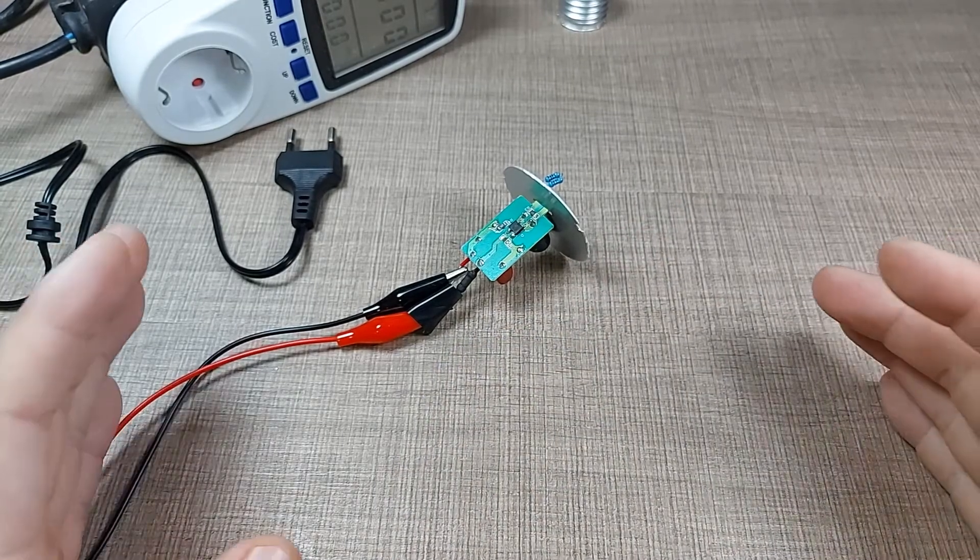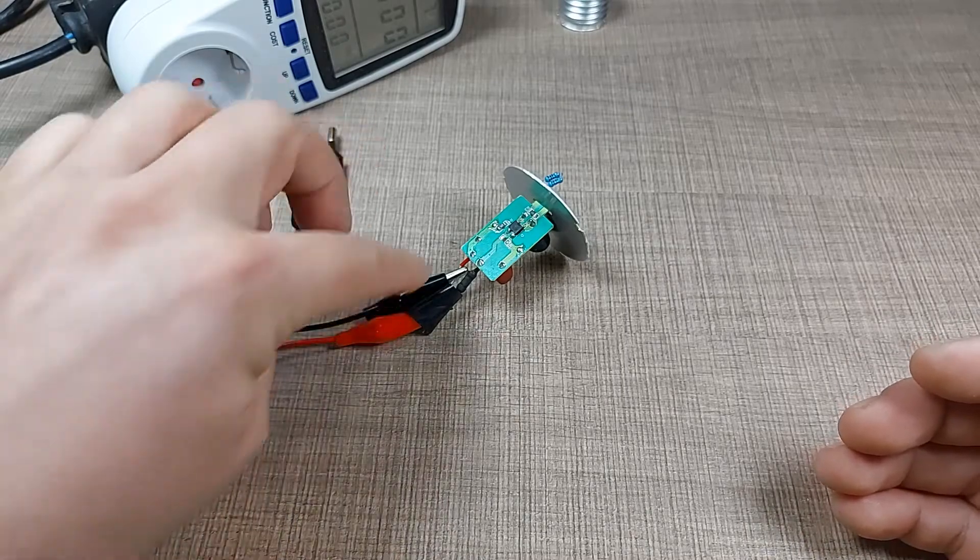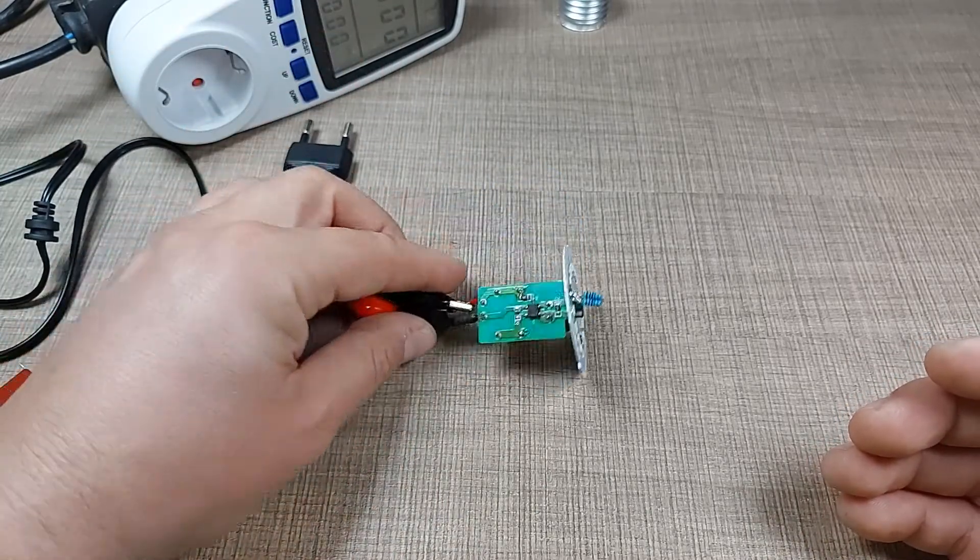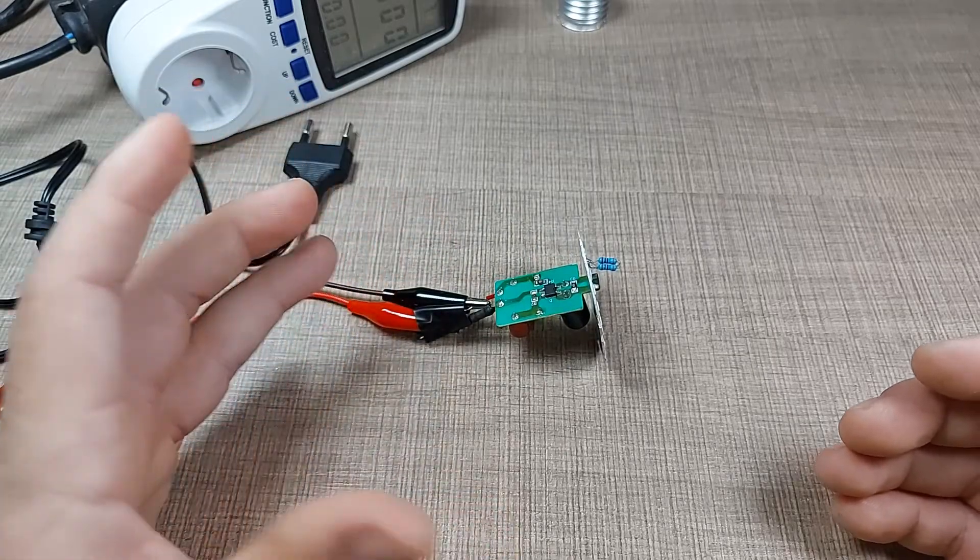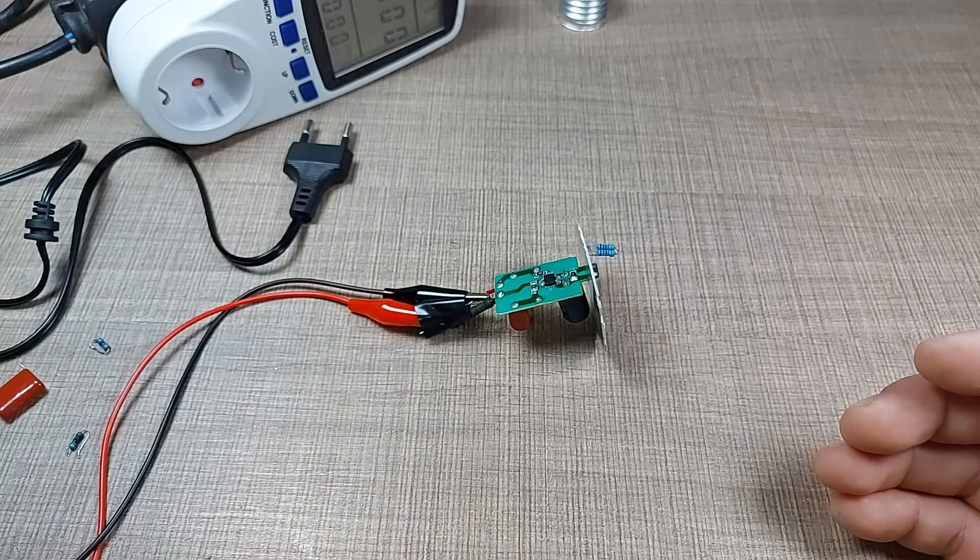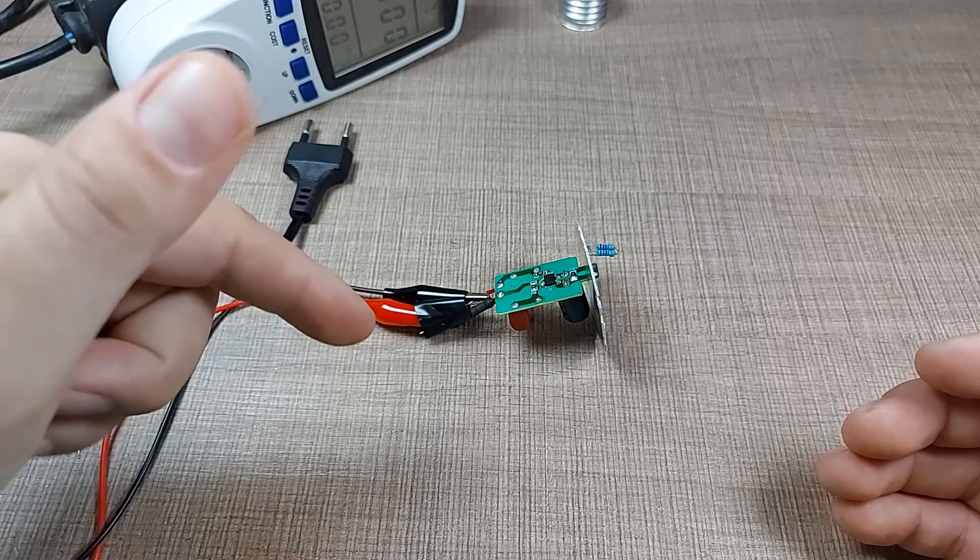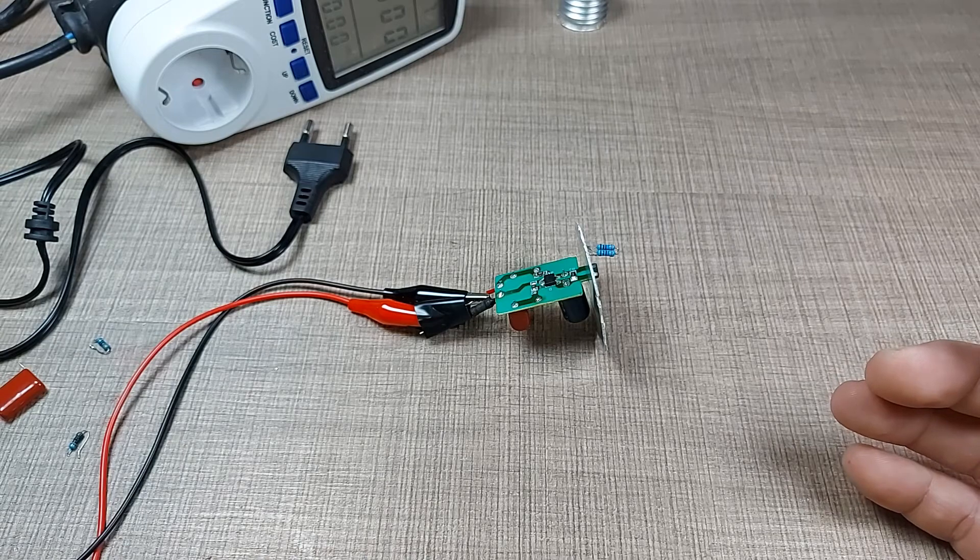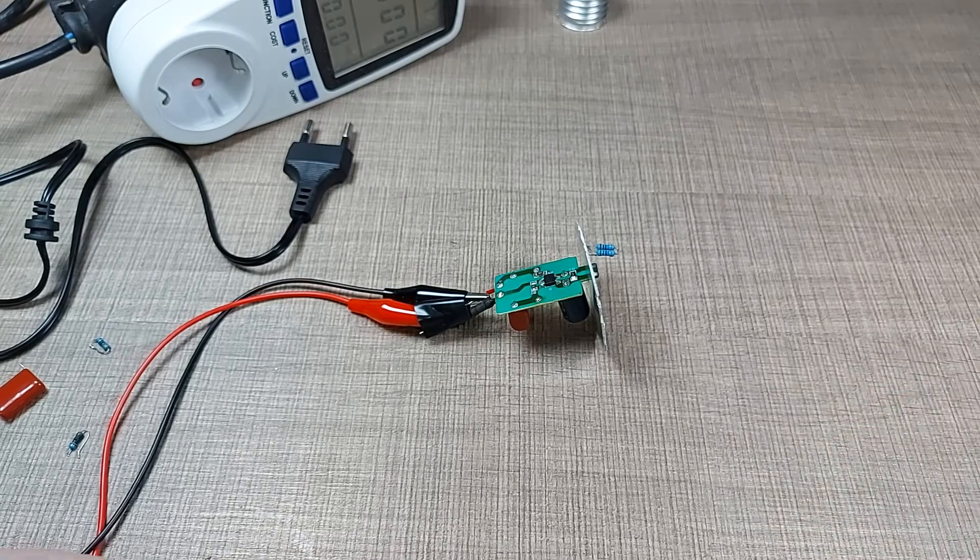And that's about it for today's video. I hope that you liked it and you managed to learn how the capacitive dropper works and how these LED bulbs are constructed and operated. If you like that, then be sure to subscribe and leave a comment below if you have any questions, and I'll see you all in the next one. Cheers.